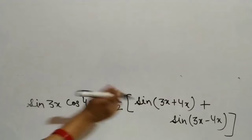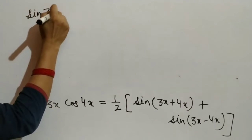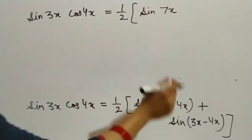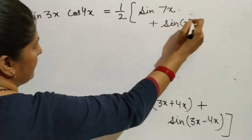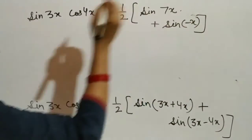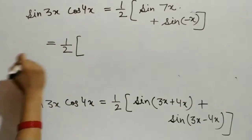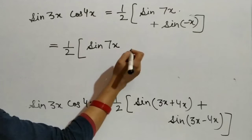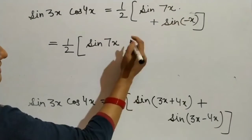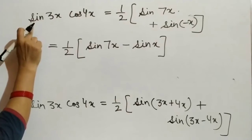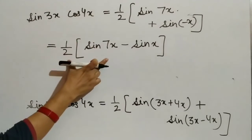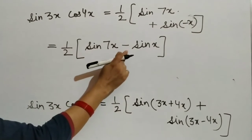Simplifying, we have 1 by 2 into sin 7x. Now we know that sin(−x) is equal to minus sin x. Thus, the given function sin 3x into cos 4x is equal to 1 by 2 into (sin 7x minus sin x).